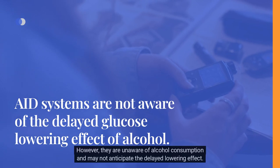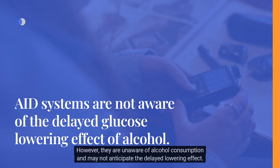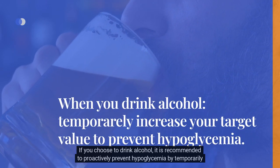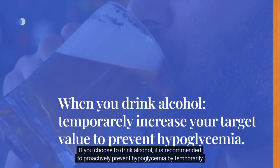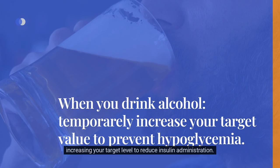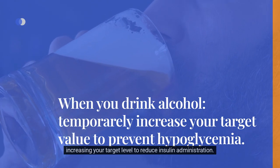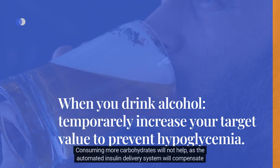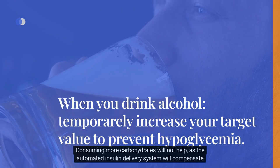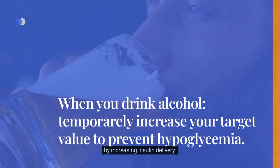However, automated insulin delivery systems are unaware of alcohol consumption and may not anticipate the delayed lowering effect. If you choose to drink alcohol, it is recommended to proactively prevent hypoglycemia by temporarily increasing your target level to reduce insulin administration. Consuming more carbohydrates will not help, as the system will compensate by increasing insulin delivery.